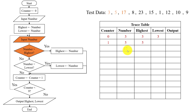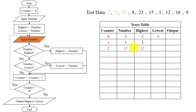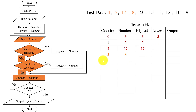Input another number, that is 17. 17 will be placed here. Now check if the number is greater than highest: 17 is greater than 5 — yes. Place 17 here and increment the counter; counter will be 2. Yes, it is less than 9, so input another number, that is 8. 8 will be placed here. Now 8 is greater than 17 — no. 8 is less than 3 — no. So we will simply increment the counter, and counter is 3.